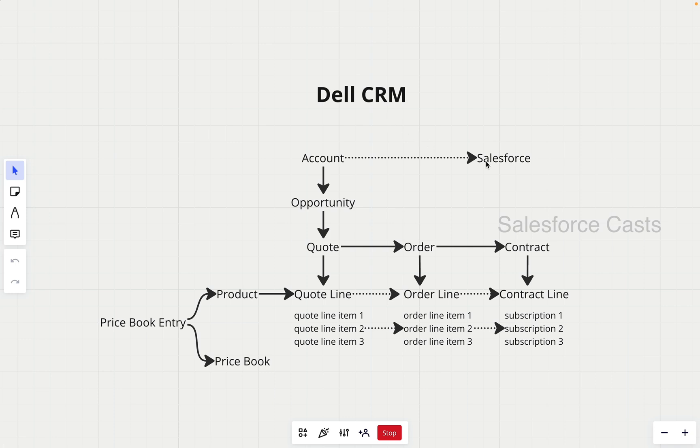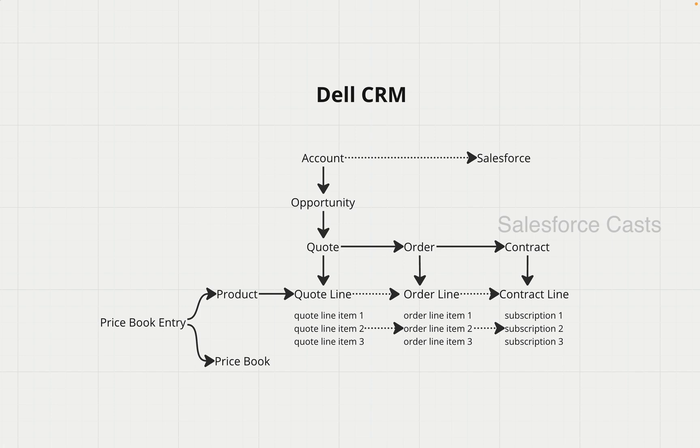Salesforce would have already done some business in the past with Dell — they would have purchased some laptops, external monitors, and other components. For the sake of the demo, let us assume that as part of a new initiative, Salesforce is interested in purchasing some CPUs, GPUs, and server components from Dell. Assume Salesforce had already done some business with Dell, and now Salesforce, as part of a new initiative, is interested in procuring some more components from Dell.